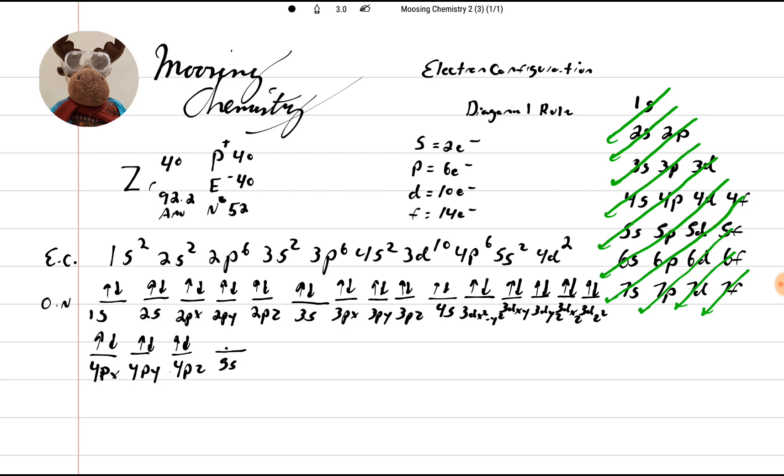5s. So we go 1, 2, and now we've got d's again. So we go 1, 2, 3, 4, 5. We'll just make it a little bit bigger. It's easier to see. 4dx squared minus y squared, 4dxy, 4dyz, 4dxz, 4dz squared. And we only have 2 of this. So we go 1 and 2.